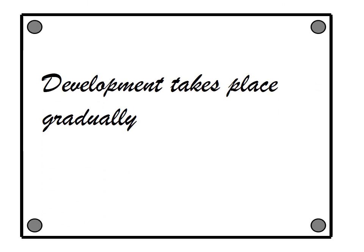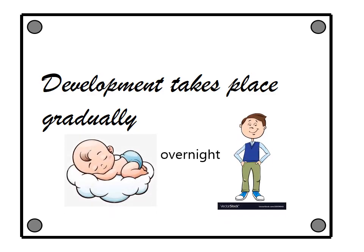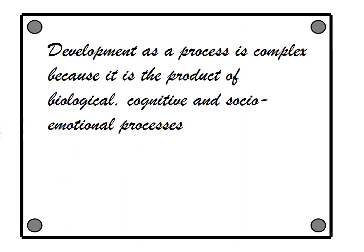Development takes place gradually. Naskiel and Ken won't develop into pimply teenagers overnight — it takes years before they become one. Development as a process is complex because it is the product of biological, cognitive, and socio-emotional processes.